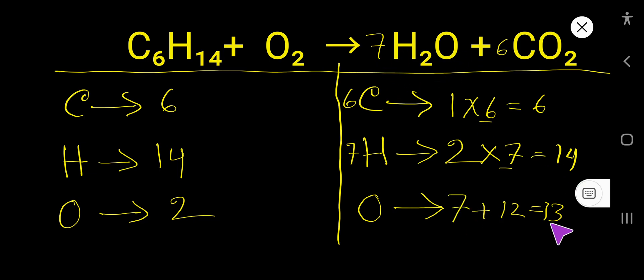So let us change this. 12 plus 7 gives us 19 oxygen on the right-hand side, but here we have 2 and we need 19.